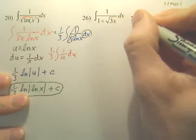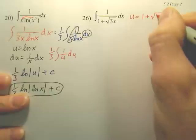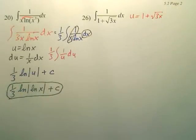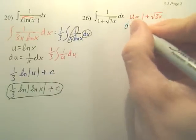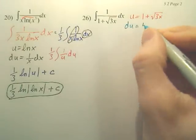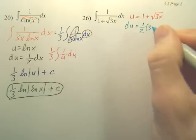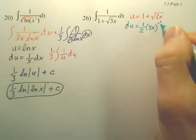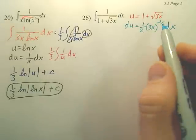We're going to make, for this particular problem, u be the denominator. And when we derive that, you get, that is 0, and this ends up being 1 half 3x to the negative 1 half, dx.